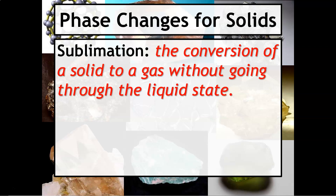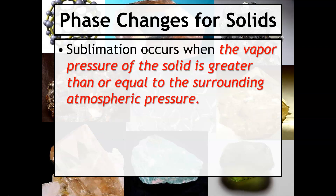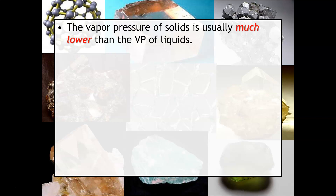Sublimation is defined as the conversion of a solid to a gas, essentially skipping over the liquid state. The reverse process — going from gas to solid — is called deposition. Sublimation will occur whenever the vapor pressure of a solid is greater than or equal to the surrounding atmospheric pressure, which usually occurs near or at room temperature. The vapor pressure of solids, however, is usually much lower than the vapor pressure of liquids, which makes sense because solids primarily have stronger intermolecular forces of attraction.